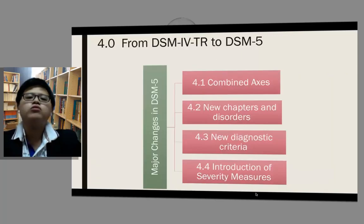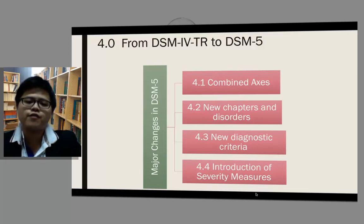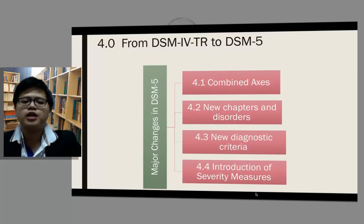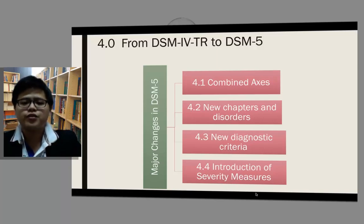Now we are going to look at the major transitions from DSM-4-TR to DSM-5. Some of the major changes in DSM-5 include combined axes, new chapters and disorders, new diagnostic criteria, and also the introduction of severity measures.